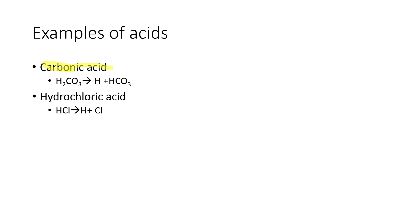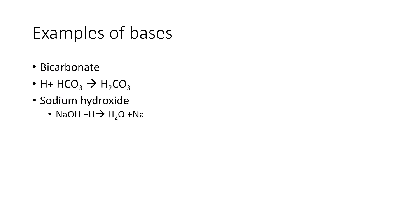I mentioned hydrochloric acid — one hydrogen and one chloride — which dissociates so the hydrogen binds to something else. Examples of bases include bicarbonate — baking soda you probably have in your refrigerator. If there are excess hydrogens, they bind to bicarbonate and give you carbonic acid.